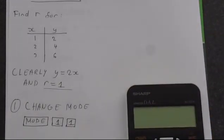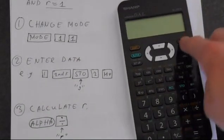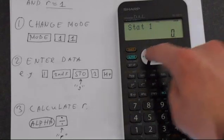So let's go through the steps to do this in the calculator. The first step is to change the mode. So we do this just by pressing, it's already in stats.